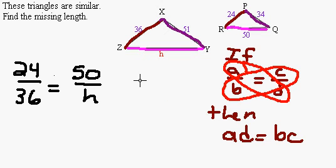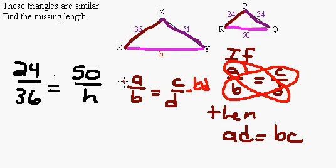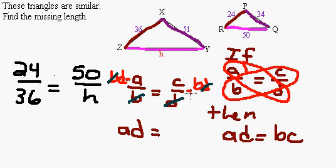Algebraically it's easy to show this is true. If a over b equals c over d and you multiply both sides by b times d — which is legal since you can multiply both sides by anything — on the right the d's cancel and on the left the b's cancel. Using the commutative property you get a times d equals b times c. That's a one-step proof of why the product of the diagonals is always equal in a proportion.